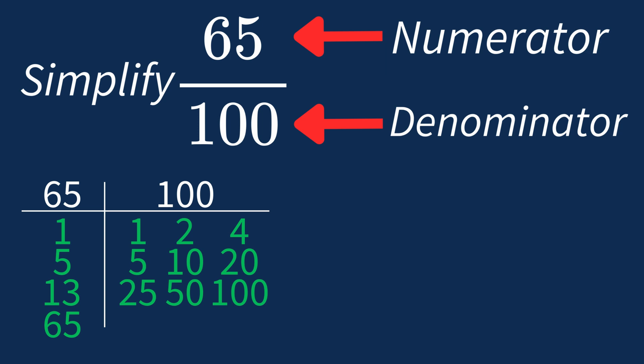So the largest common factor between 65 and 100 is 5. This means we can divide both the numerator and denominator by 5 to simplify the fraction.